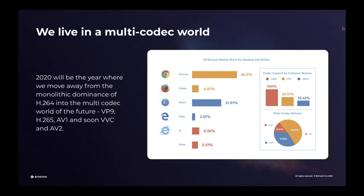Thank you, Kieran. I think you and Cathy already said it — basically we live in a multi-codec world. We think 2020 will be the year where we move away from the monolithic dominance of H.264 into a multi-codec world. If you look at the statistics, you can reach 100% of devices with H.264, but you are not providing the best quality by just using H.264. There are codecs out there which are much more efficient — VP9 or HEVC, for example, are 50% more efficient than H.264, and you can reach a stunning amount of devices with these codecs. You can actually reduce your costs or keep costs the same and double the quality for your users. We think this complexity will just continue to grow, with new formats like AV1, VVC, and AV2 currently in the making for 2020 and beyond.